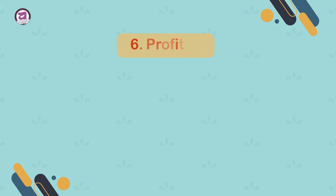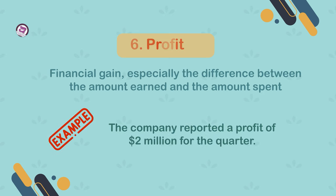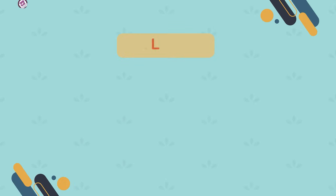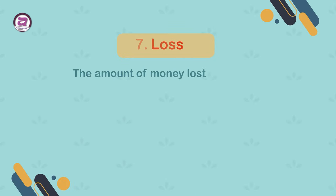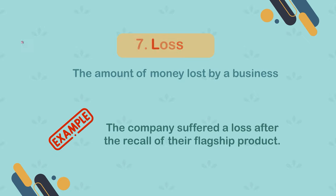6. Profit. Financial gain, especially the difference between the amount earned and the amount spent. Example: the company reported a profit of $2 million for the quarter. 7. Loss. The amount of money lost by a business. Example: the company suffered a loss after the recall of their flagship product.